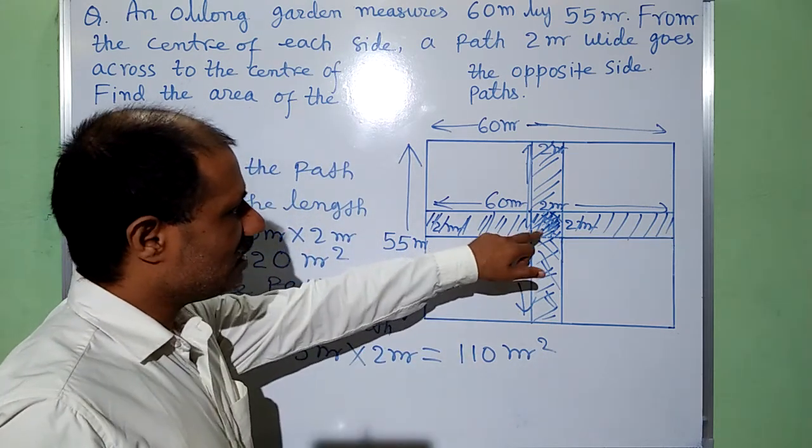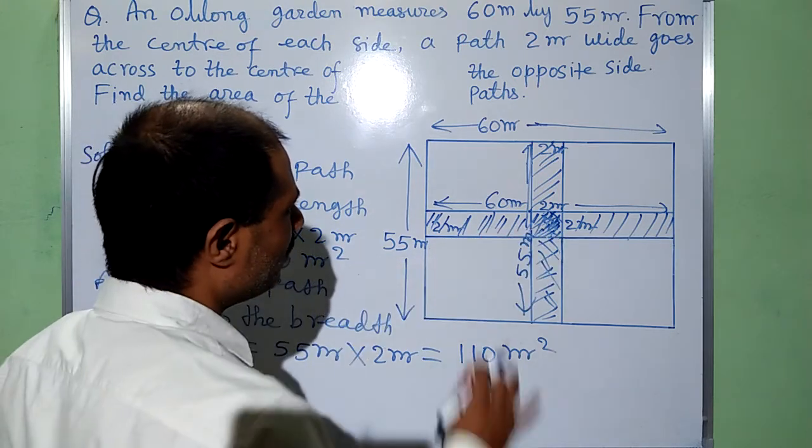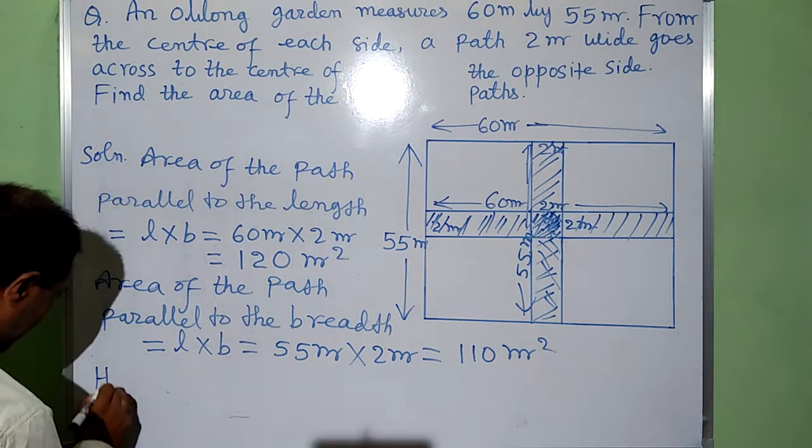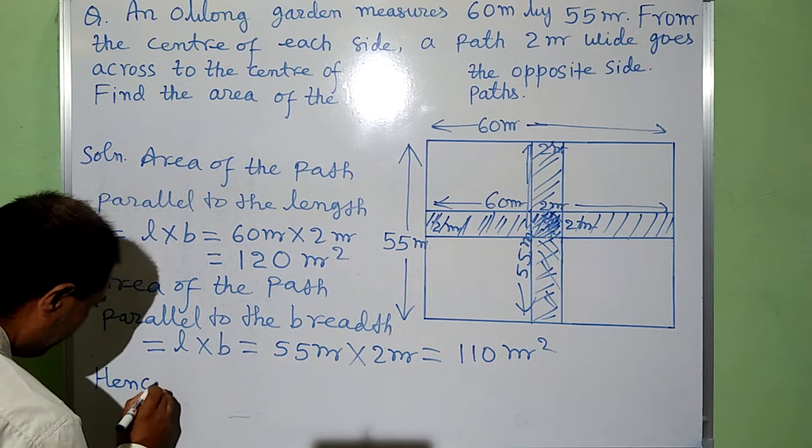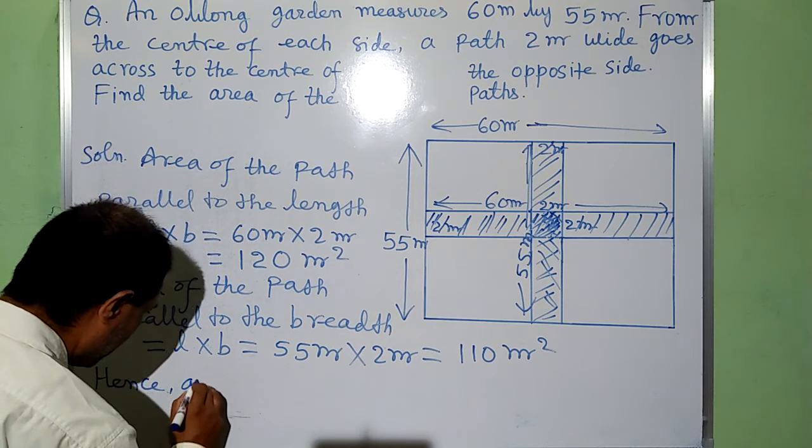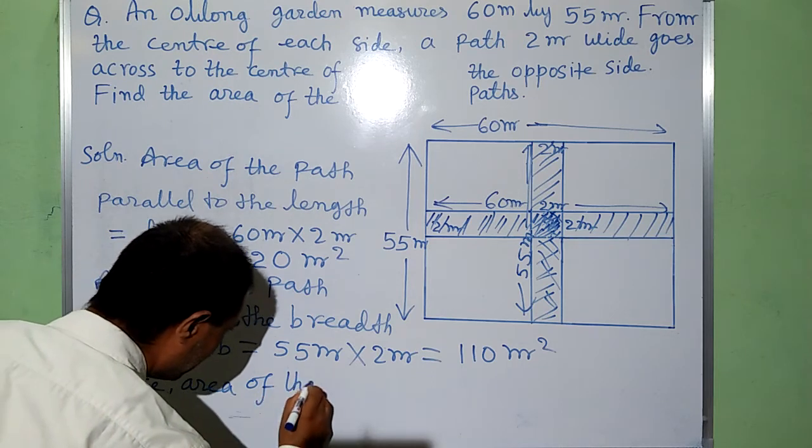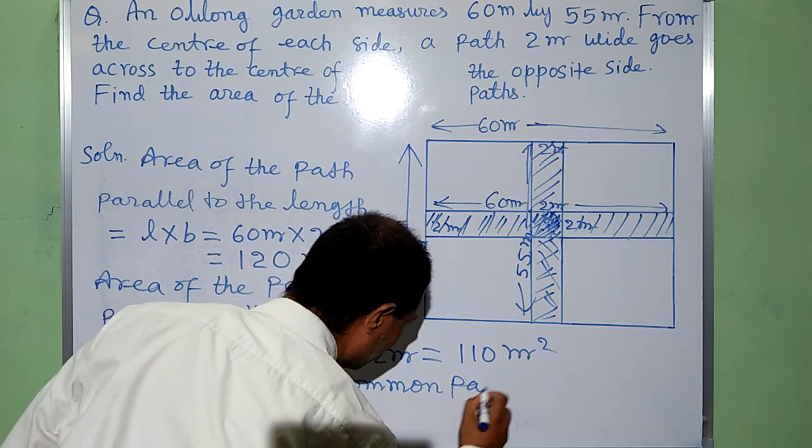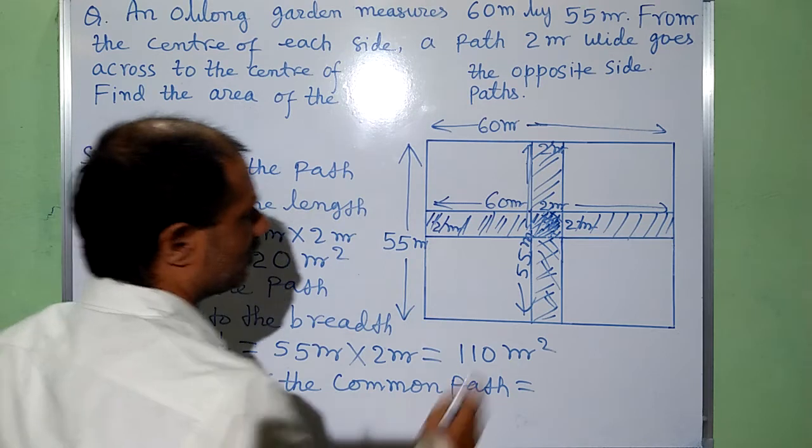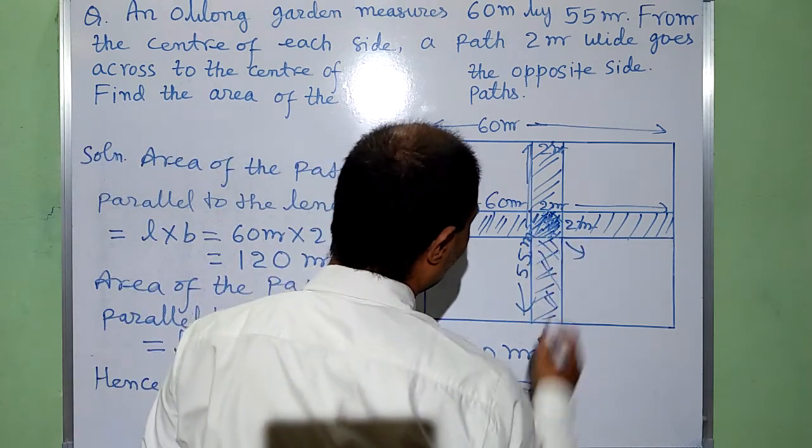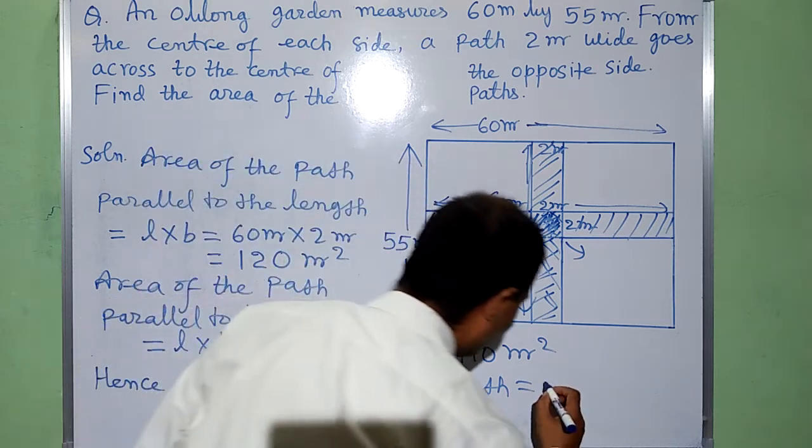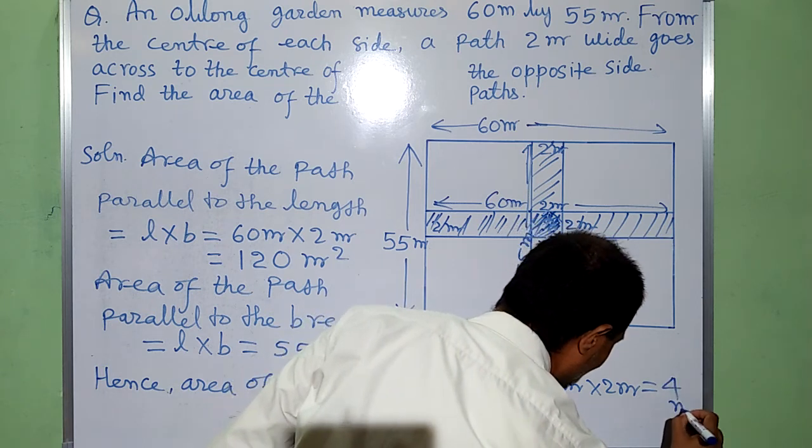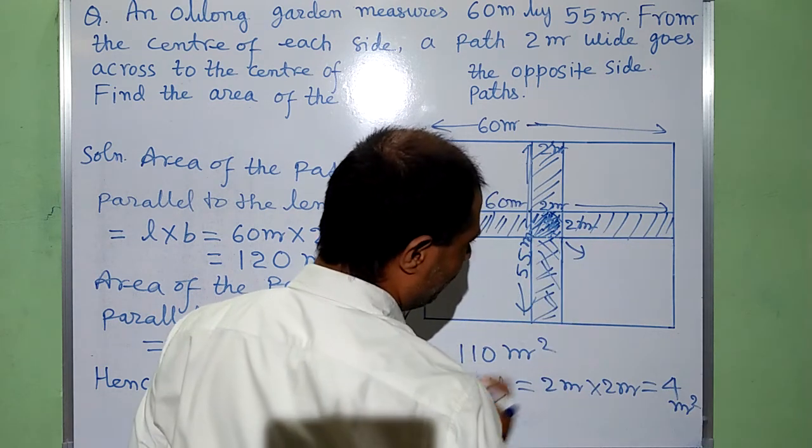But we have to take area of this path only one time. Two times it is added, so one time it will be subtracted. Hence, area of the common path: this path is square 2 meter into 2 meter, that is 4 meter square.